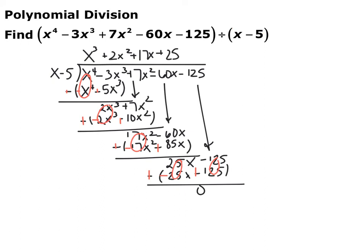What you're dividing by goes outside the house. You're looking: what do I need to multiply this x by to get x to the fourth? I need to multiply x by x cubed to get x to the fourth. Then just like regular long division, I'm going to multiply that back. x cubed times x is x to the fourth — these should always be the same exact thing. But then you also need to multiply x cubed by negative 5, so you get negative 5x cubed.